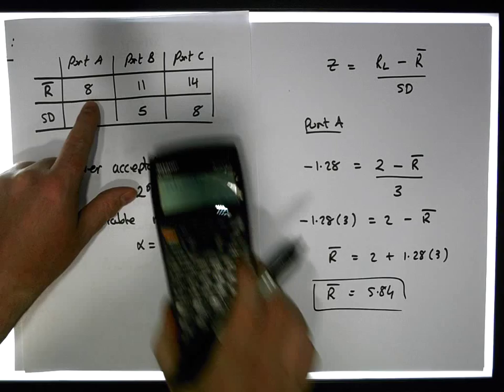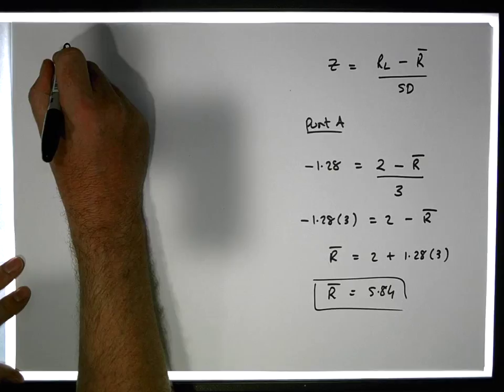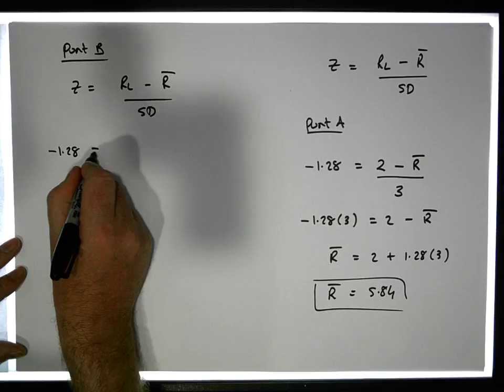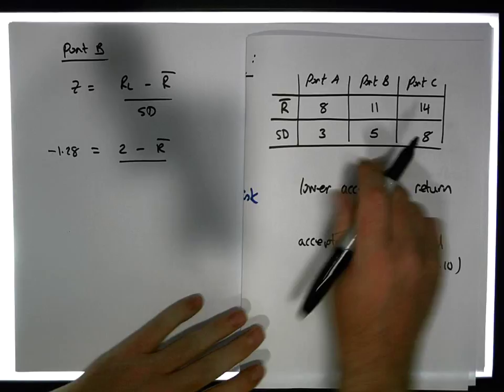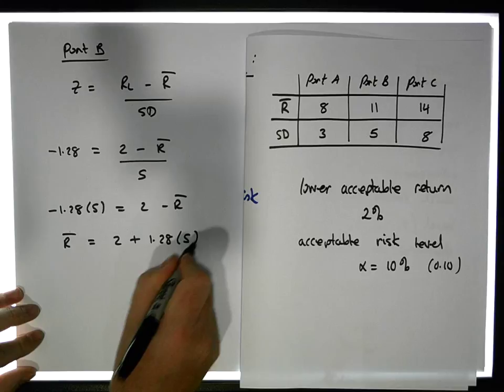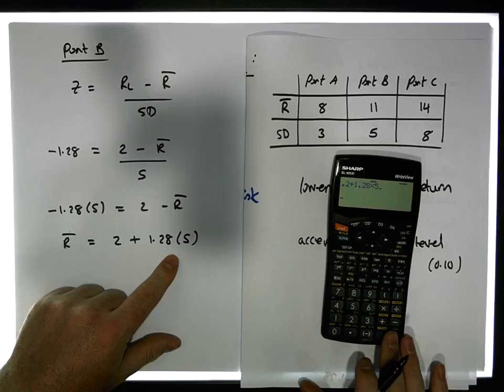What about Portfolio B? For Portfolio B, Z is equal to RL minus R̄ over SD. So we have minus 1.28 equals 2% minus the expected value, all over the standard deviation, which is 5. So minus 1.28 times 5 equals 2 minus R̄, meaning R̄ equals 2 plus 1.28 times 5, which gives us 8.4%. So R̄ is 8.4%.